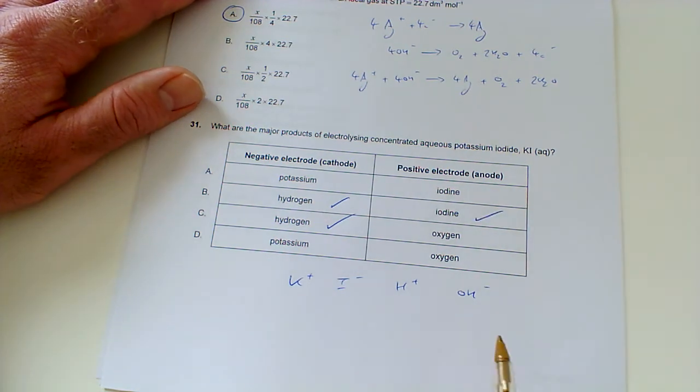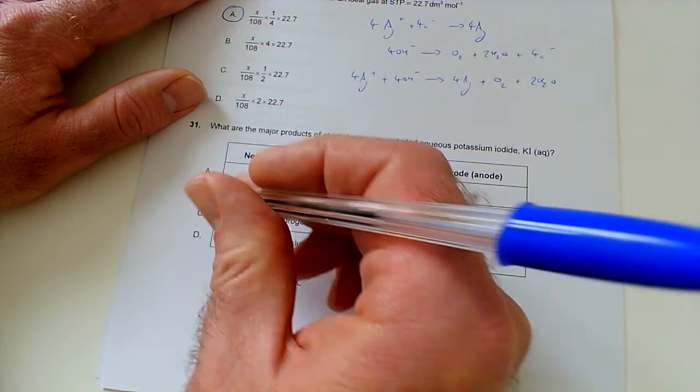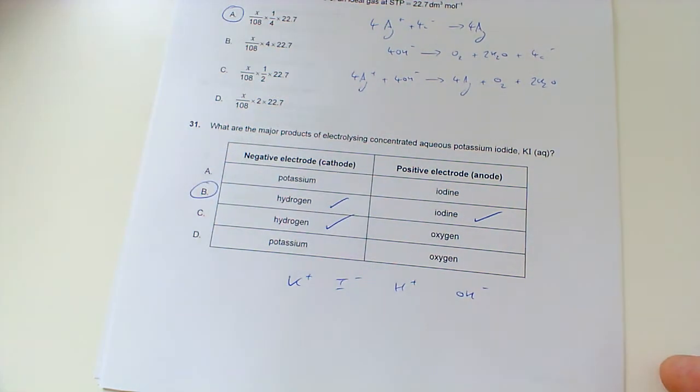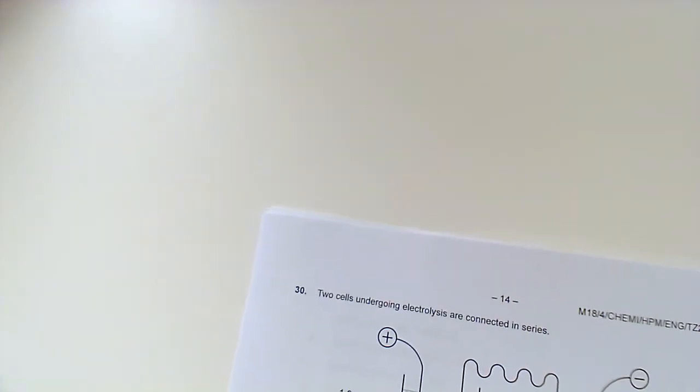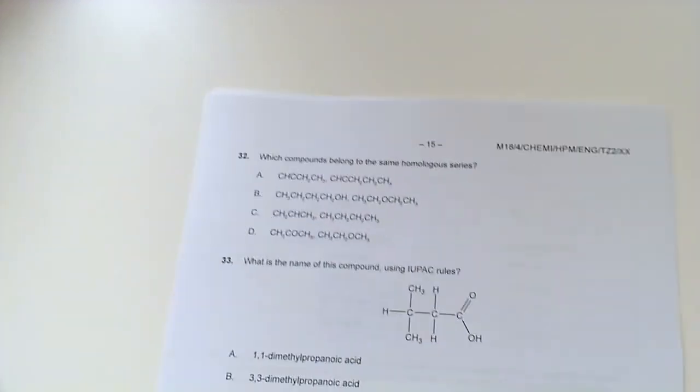So, we're going to go with iodine there. If it was a very, very dilute solution, then yes, we would get oxygen produced from the hydroxide ions. So, that would be 32.